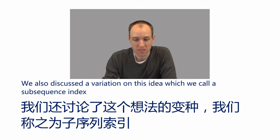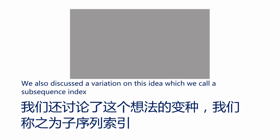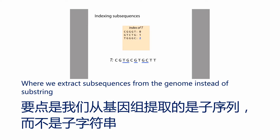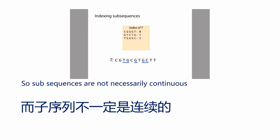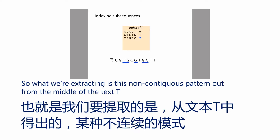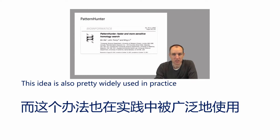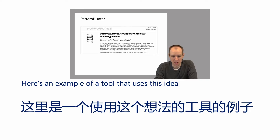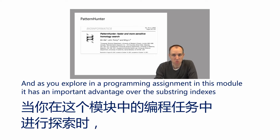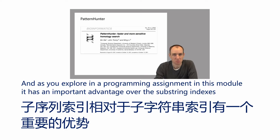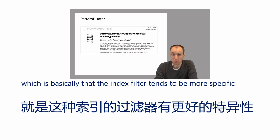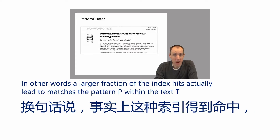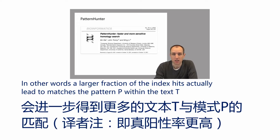We also discussed a variation called a sub-sequence index, where we extract sub-sequences from the genome instead of sub-strings. Sub-sequences are not necessarily contiguous — what we're extracting is a non-contiguous pattern from the text T. This idea is also widely used in practice, and as you'll explore in a programming assignment in this module, it has an important advantage over sub-string indexes: the index filter tends to be more specific. A larger fraction of the index hits actually lead to matches of the pattern P within the text T.